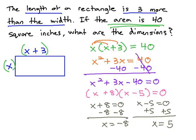However, we need to remember that we are talking about the length of a rectangle. X is the width of this rectangle. It would not make sense to have a width of negative eight inches, so we'll have to exclude that one as a possible answer, but it would make sense to have a width of five inches.